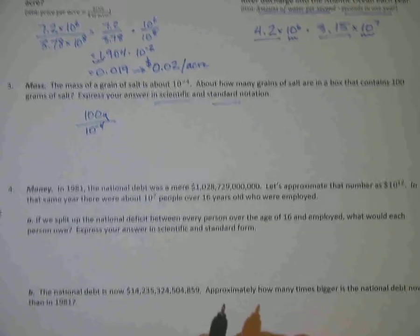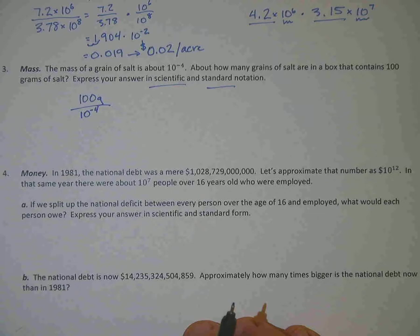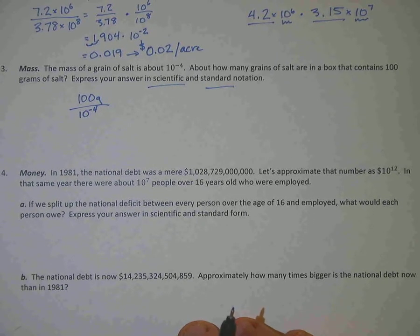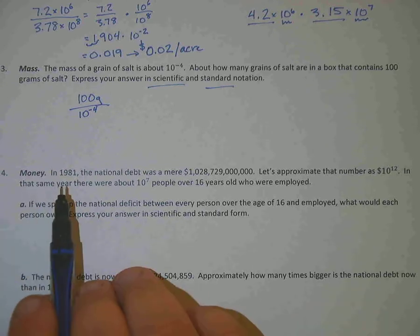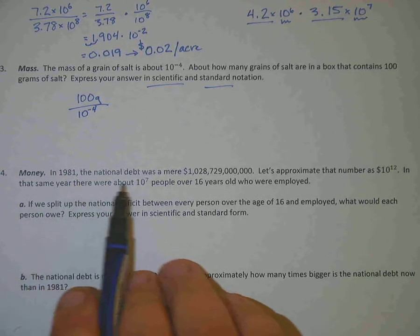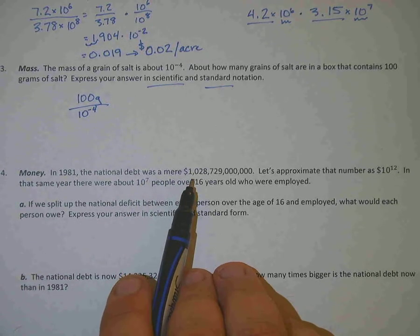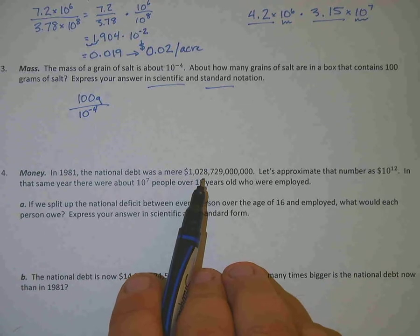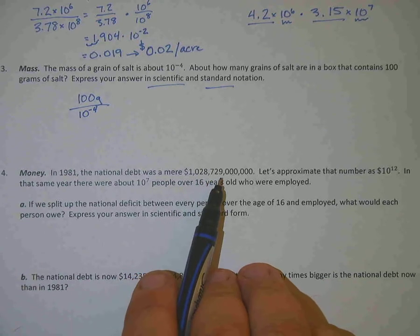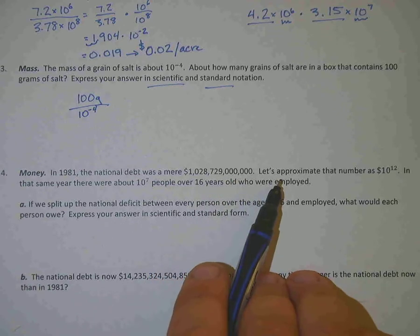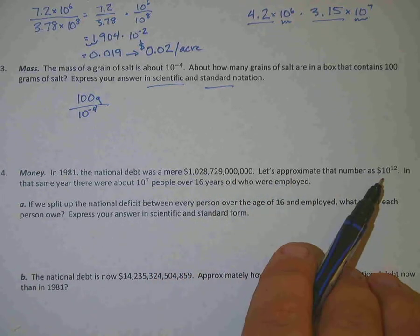All right. Let's look at the last one here. It actually has two parts to it. And I'll help you out on the first part and let you go on the second. For the first part of this problem, it says that in 1981, the national debt was a mere $1,028,729,000,000. So that's quite a bit. We're going to go ahead and approximate that as 10 to the 12th.